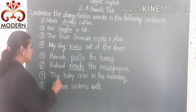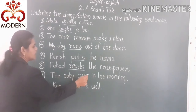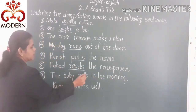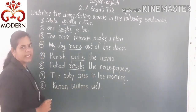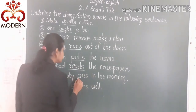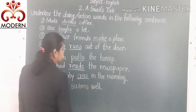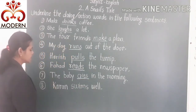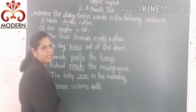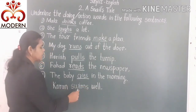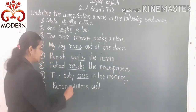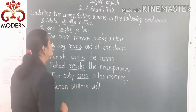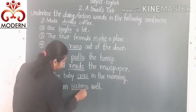Then the seventh sentence: The baby cries in the morning. The baby cries — 'cry' is the action word, so underline it. The next sentence is: Karan swims well. Karan swims — 'swim' is the action word, the doing word, so underline it.